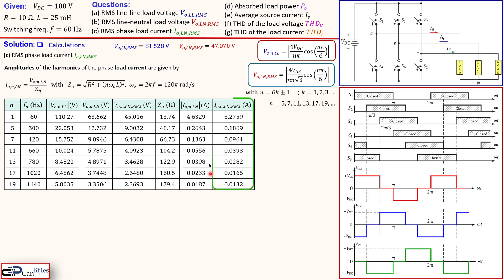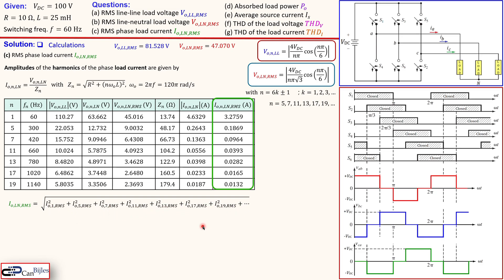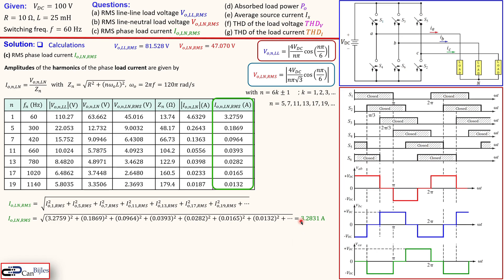Taking the current RMS column and combining all harmonics — summing the squares of each harmonic RMS current and taking the square root — the total RMS phase load current comes out to 3.2831 amps, calculated up to n=101.